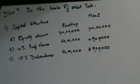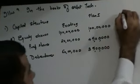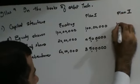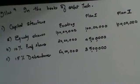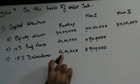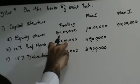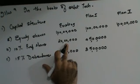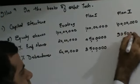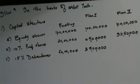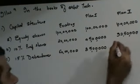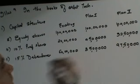Plan 2: issue preference shares to the extent of 25% and the balance by way of debentures. Equity remains at 1 crore. 25% of 50 lakhs is 12,50,000. I had 20 lakhs of preference shares; adding 12,50,000 gives 32,50,000. The remaining 37,50,000 goes to debentures. 60 lakhs plus 37,50,000 is 97,50,000. That's Plan 2.